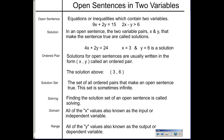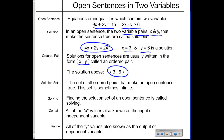An open sentence in two variables can be an equation or an inequality. The solution is a variable pair, usually using the letters X and Y. So if X equals 3 and Y equals 6, that would make the sentence true — that's one solution. An ordered pair is the name given to that X and Y combination, so the solution could be stated as (3, 6).